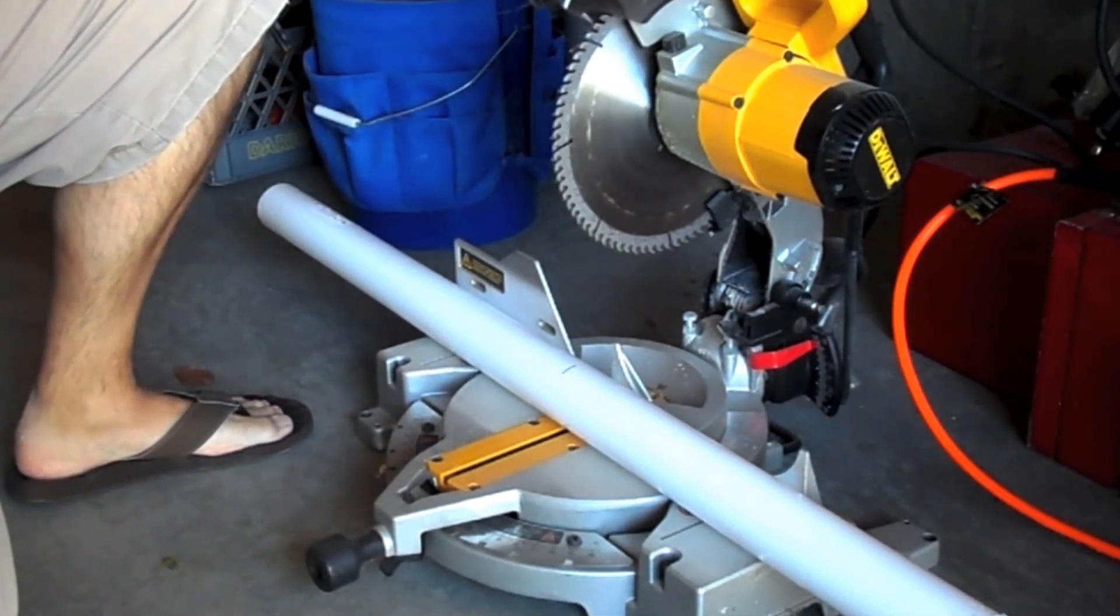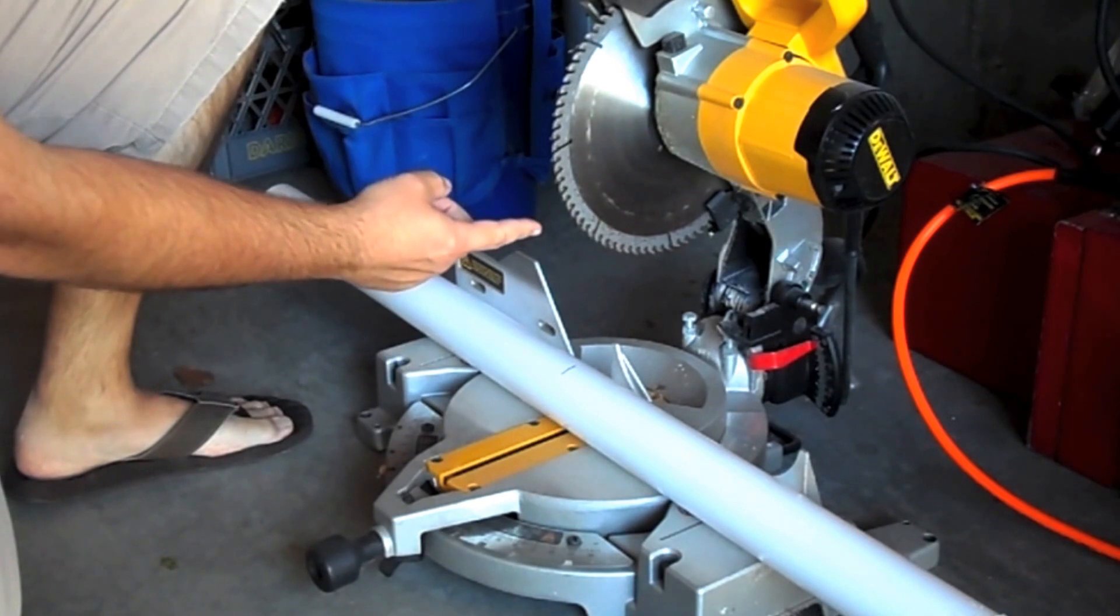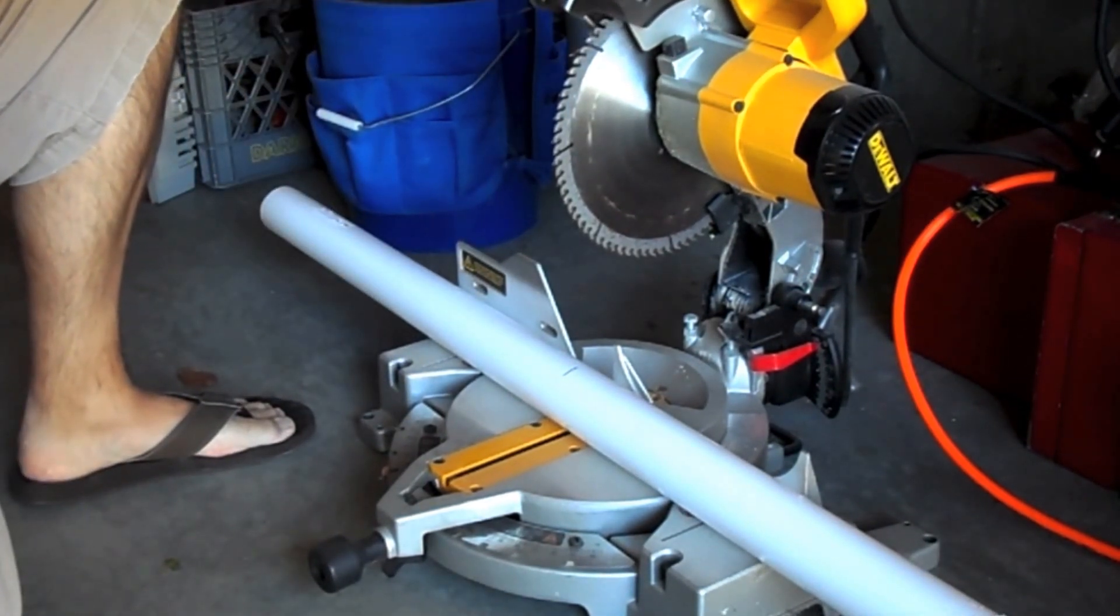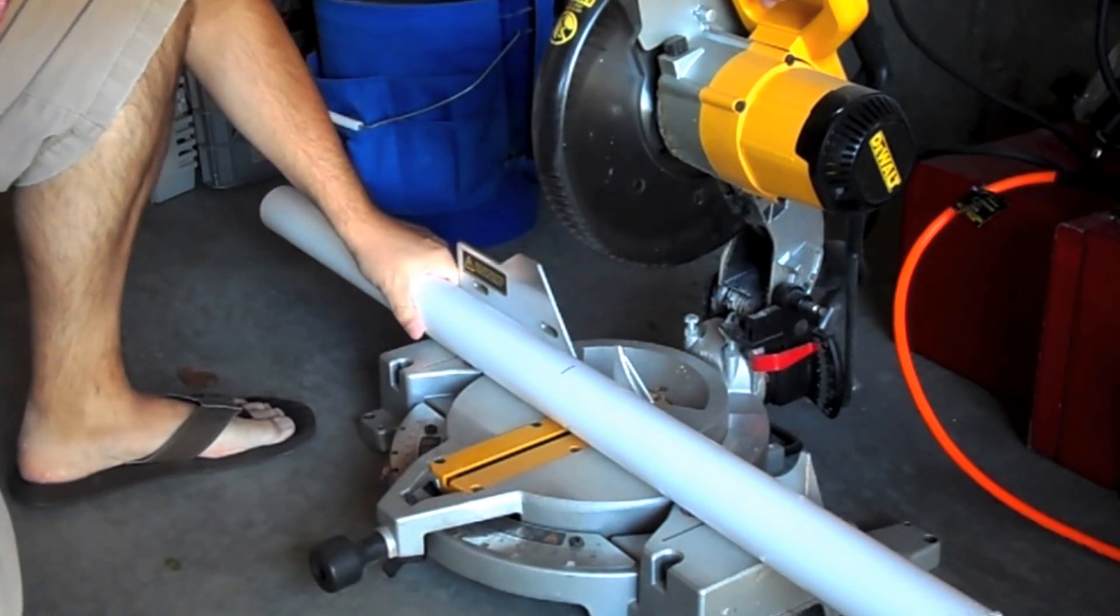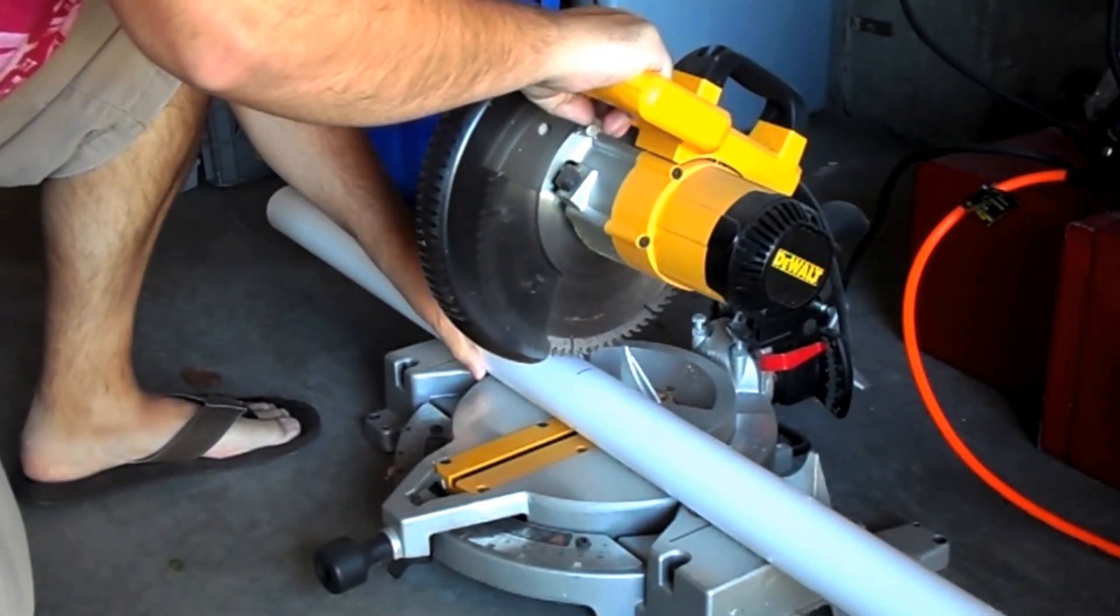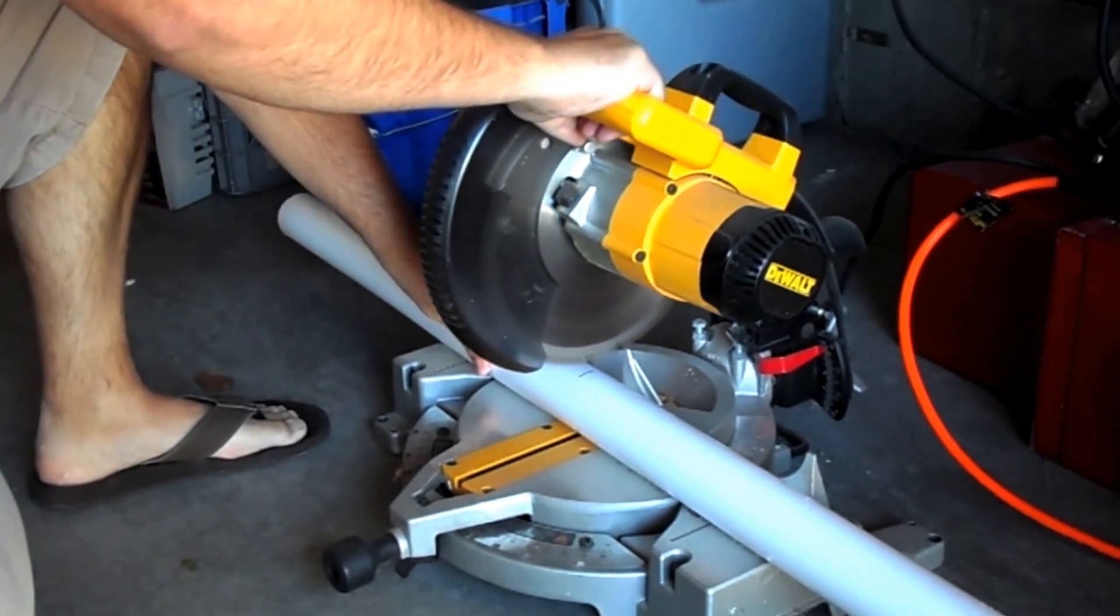You can cut PVC pipe with a circular saw but you want to make sure you get a blade with a high tooth count. This blade has 80 teeth. Also when you're cutting make sure to go slowly so you don't take large chips out of the PVC pipe. This will cause it to fracture.